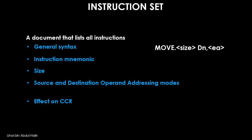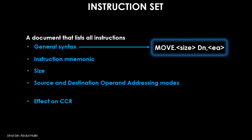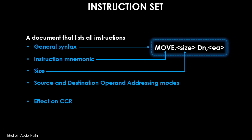Let's have a look at an example of how MOVE is written in the instruction set document. It reads: MOVE.size Dn, EA. This is the general syntax or the general method of writing the instruction. The mnemonic is MOVE, followed by dot size, which tells the microprocessor the size of the operand — either a byte, a word, or a long word. Next we have Dn and EA, which specify the source and destination addressing modes respectively. Dn tells us that any data register can be used for the source operand, while EA as the destination operand means we can use an addressing mode that calculates the effective address of the destination operand.